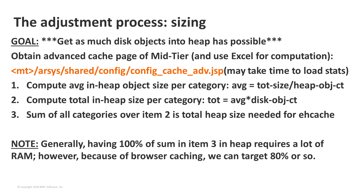The fastest retrieval is from heap; the next fastest is from disk. Our objective is to see how much we have on disk and how much of that we can put into heap given our JVM heap limit. The goal is to get as much disk content into heap as possible. First, obtain the advanced cache page of the Mid-Tier. If you access this for the very first time, it will take a little time to load because EH cache has to compute all the stats. Once the page is loaded, right-click and save the whole page.